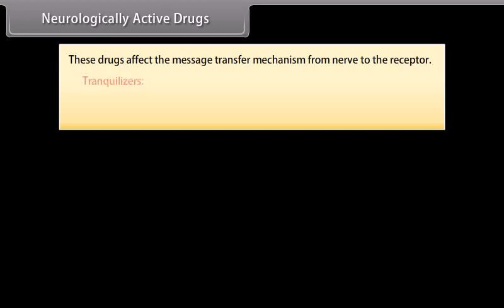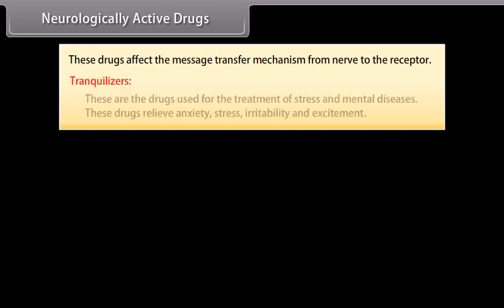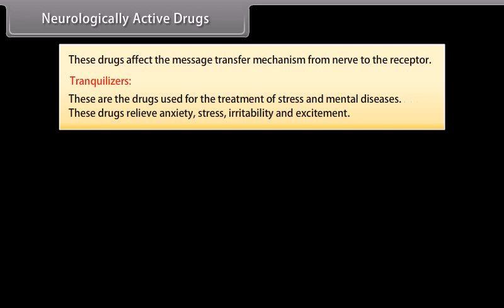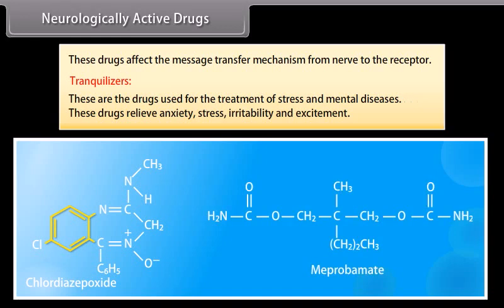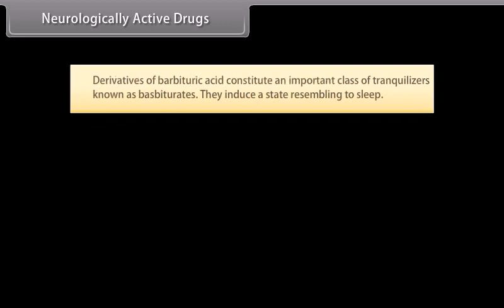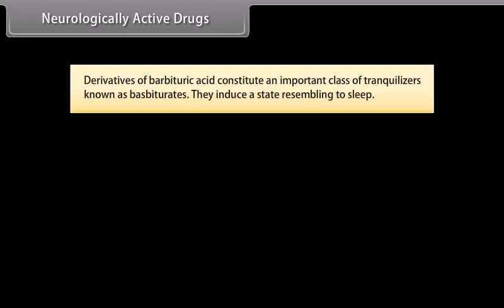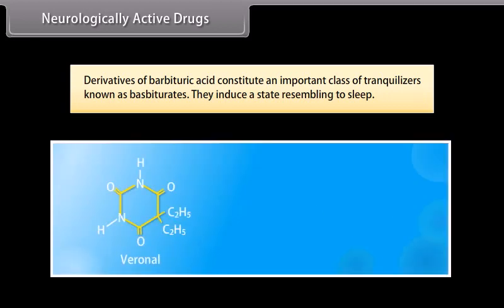Neurologically active drugs: these drugs affect the message transfer mechanism from nerve to the receptor. Tranquilizers: these are drugs used for the treatment of stress and mental diseases. These drugs relieve anxiety, stress, irritability and excitement. For example, chlordiazepoxide and meprobamate are mild tranquilizers. Derivatives of barbituric acid constitute an important class of tranquilizers known as barbiturates; they induce a state resembling sleep. For example, veronal and luminal.